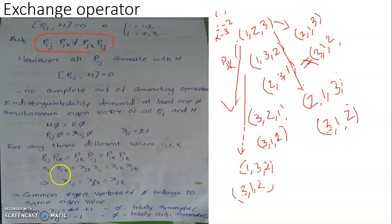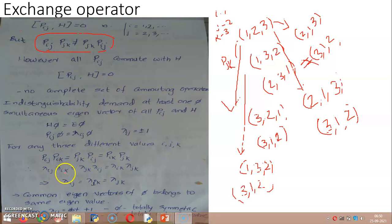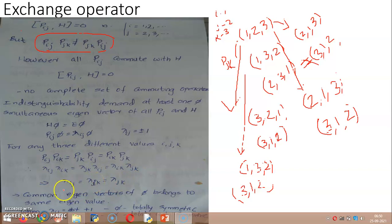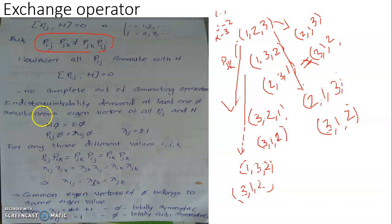From the comparison of these relations, we get λ_ik equal to λ_jk, and upon comparing further, λ_ij equals λ_jk. This means λ_jk equals λ_ij, indicating that λ_ij equals λ_ik equals λ_jk. So the eigenvalues of operators P_ij, P_ik, and P_jk are exactly equal, meaning their eigenvectors must also be equal — these operators share a common set of eigenvectors.